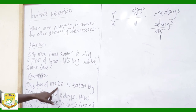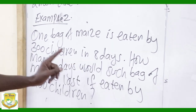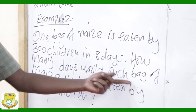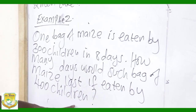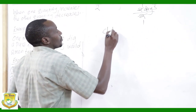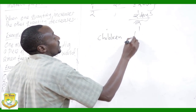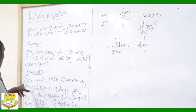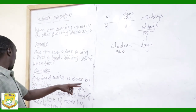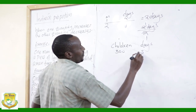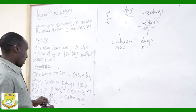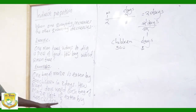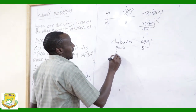Example 2: One bag of maize is eaten by 300 children in 80 days. How many days would such a bag of maize last if eaten by 400 children? We have children on one side and days on the other. We are told 300 children can eat the bag in 80 days. The question asks how many days it would last for 400 children — the number has increased.